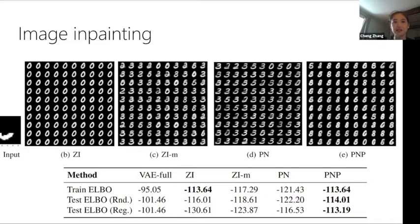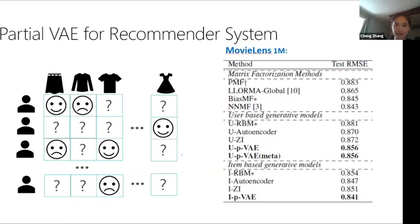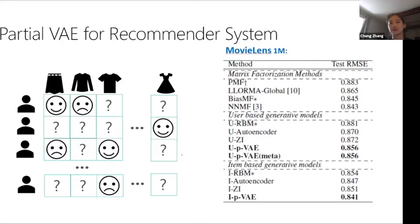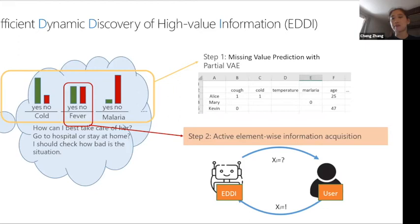For recommender systems, we formulate rating prediction as missing value completion in a user-item matrix. Tested on MovieLens 1M, our method performs better than state-of-the-art methods before 2019. This completes step one: the partial VAE enables missing value prediction in a probabilistic and scalable manner. Before introducing step two — element-wise information acquisition — are there any questions?